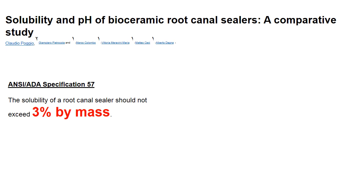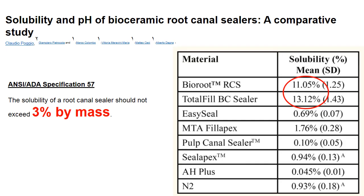Solubility is a different matter. Any root canal sealer will exhibit some solubility as it is a paste, but it should not exceed 3%. A study showed that BioRoot and TotalFill have solubility of 11 to 13%, which is way above the acceptable limit. So even when choosing bioceramic sealers, it is important to check the solubility percentage.